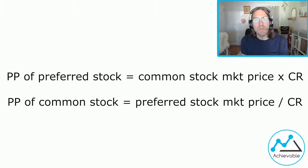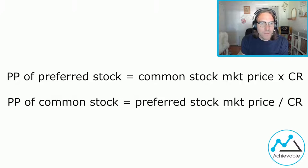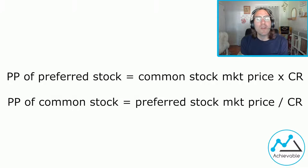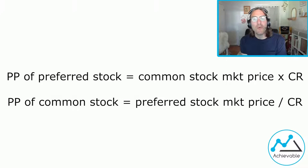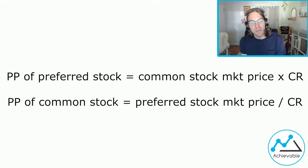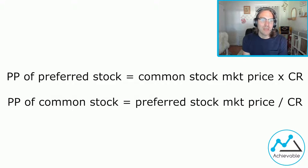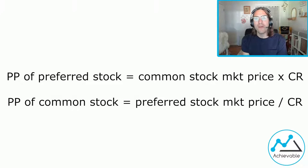One last tip for the exam: if you can't remember whether to multiply or divide, think about what number you should end up with. If you're looking for the parity price of the preferred stock with a PAR value of $100, your answer should be close to $100. If you divide instead of multiply, you'd get a very low number far from any answer choice. If you multiply instead of divide for the parity price of common stock, you'd get a very large number unrelated to where the common stock is trading. Hopefully that will help with your math-based convertible questions. Now go out there, go through some practice questions, and try it on your own.